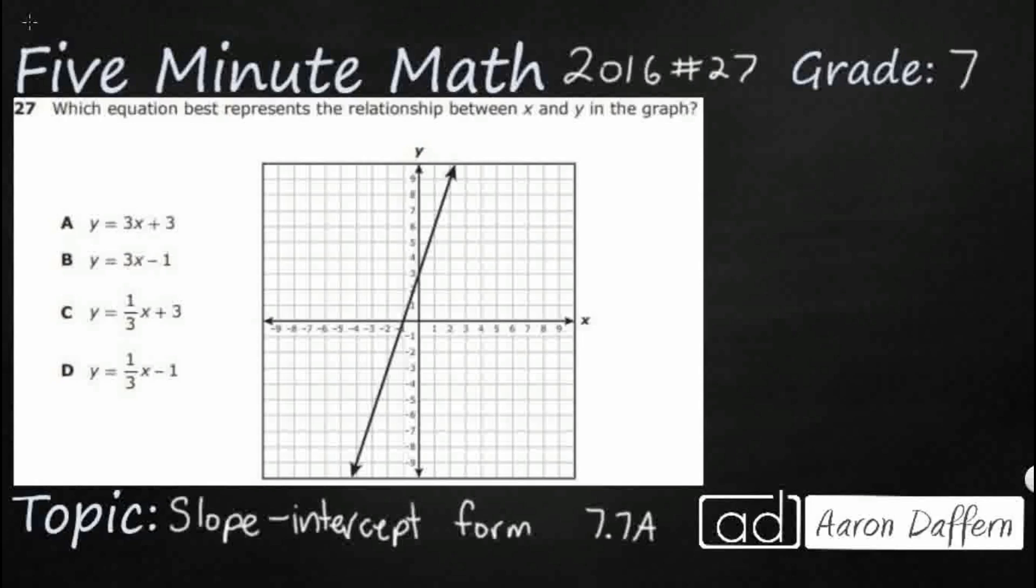Hello and welcome to 5-Minute Math. Today we are looking at the 7th grade concept of slope-intercept form. This is standard 7.7a in the great state of Texas and we are using item number 27 off the 2016 released STAR test.